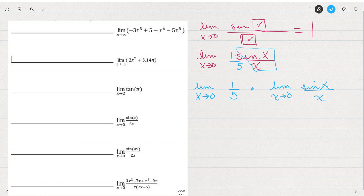Well, the limit of 1/5 as x approaches 0, it's a constant, is just 1/5. And by definition, the limit of sine box over box as x approaches 0 is 1. So the limit of sine x over 5x as x approaches 0 is 1/5 times 1 or 1/5.